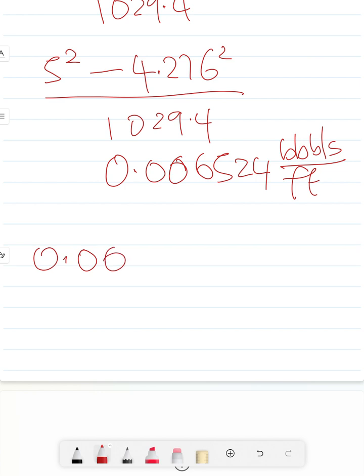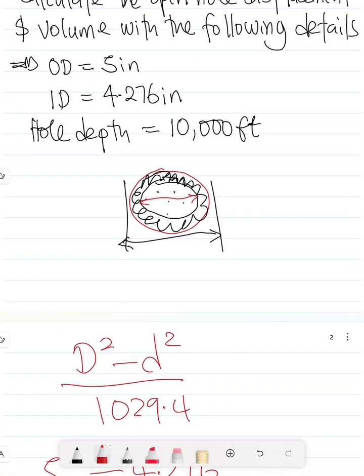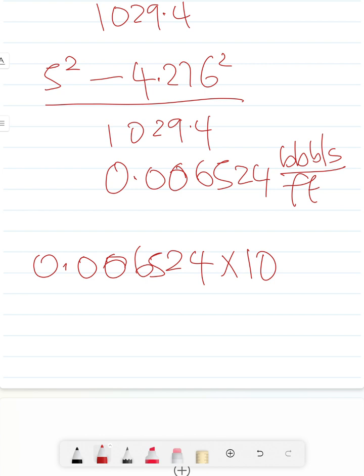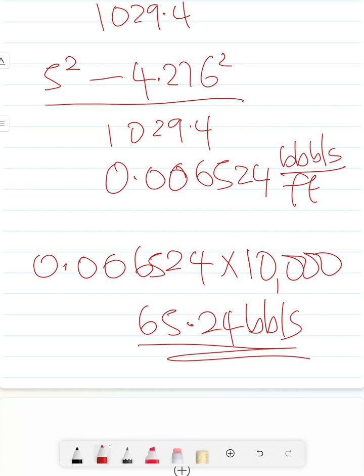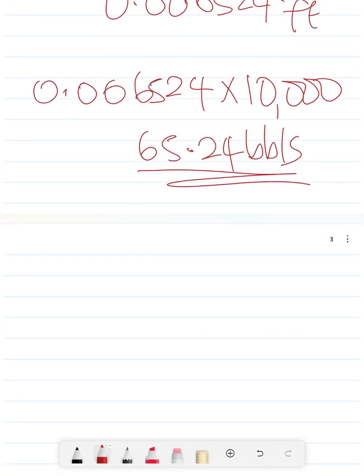If you want to know what that translates to in volume, that's going to be 0.006524 times 10,000 feet, which equals 65.24 barrels. That's how much it's going to displace.